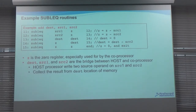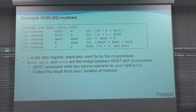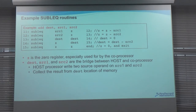To perform a simple add operation using the sublet routine: first we perform C minus SRC1 to get Z equal to minus SRC1. Then we perform Z minus SRC2, giving us the negation of the sum. Then we clear the destination register. Finally we shift the Z register into the destination register and clear Z for the next operation. This takes five instructions, and with five clock cycles each, the total is 25 clock cycles.